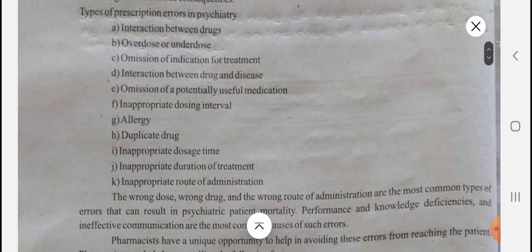The types of prescription errors in psychiatry include: interaction between drugs, overdose or underdose, omission of indication for the treatment, interaction between the drug and the disease, omission of a potentially useful medication, inappropriate dosing interval or frequency, allergies, duplicate drug, inappropriate dosage form, inappropriate duration of treatment, and wrong route of administration. Wrong drug and wrong route of administration are among the most common types.